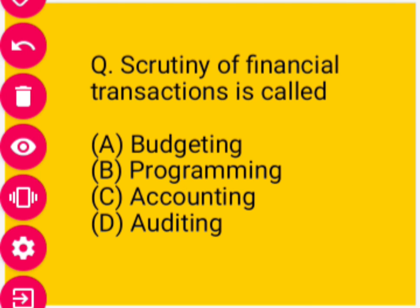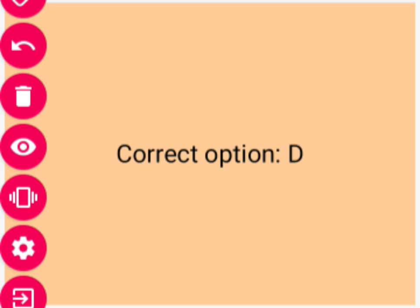Next: Scrutiny of a financial transaction is called — options given: first, budgeting; second, programming; third, accounting; fourth, auditing. Correct option is question ka hoga auditing. Financial transaction ka scrutiny us ke andar kiya jata hai auditing ke andar — fourth option will be correct.